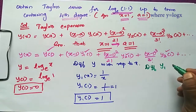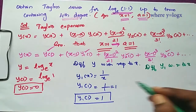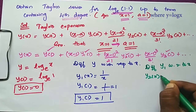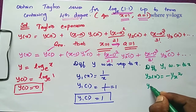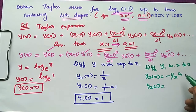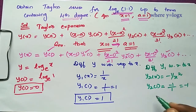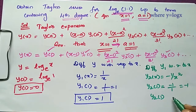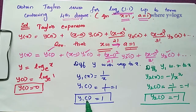Differentiating y₁ with respect to x gives y₂(x) = −1/x². So y₂(1) = −1. Summary so far: y(1) = 0, y₁(1) = 1, y₂(1) = −1.